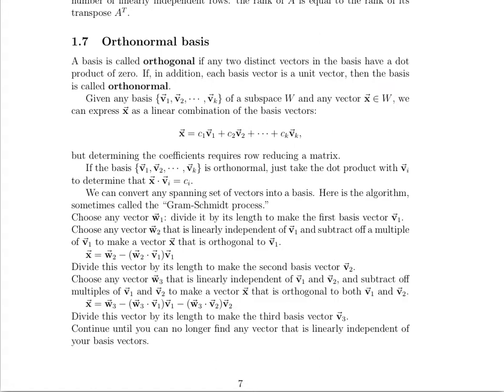Given any basis of a subspace W and any vector in W, we can express by the definition of a basis that vector x as a linear combination of the basis vectors. It's important to note here that we are saying any basis. This is not necessarily an orthonormal basis. Any basis at all. Determining the coefficients here will require row-reducing a matrix. We talked about that two videos ago. But what's great about orthonormal basis over other basis is that with an orthonormal basis, all you have to do is take your particular vector and dot it with a basis vector, and whatever you get is going to be the coefficient on that basis vector for you to find that linear combination.